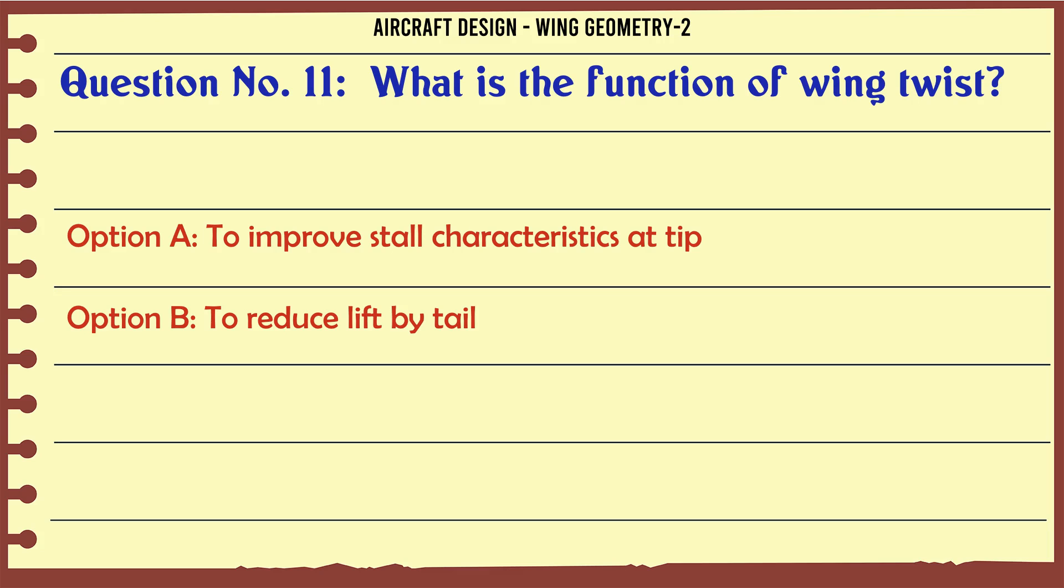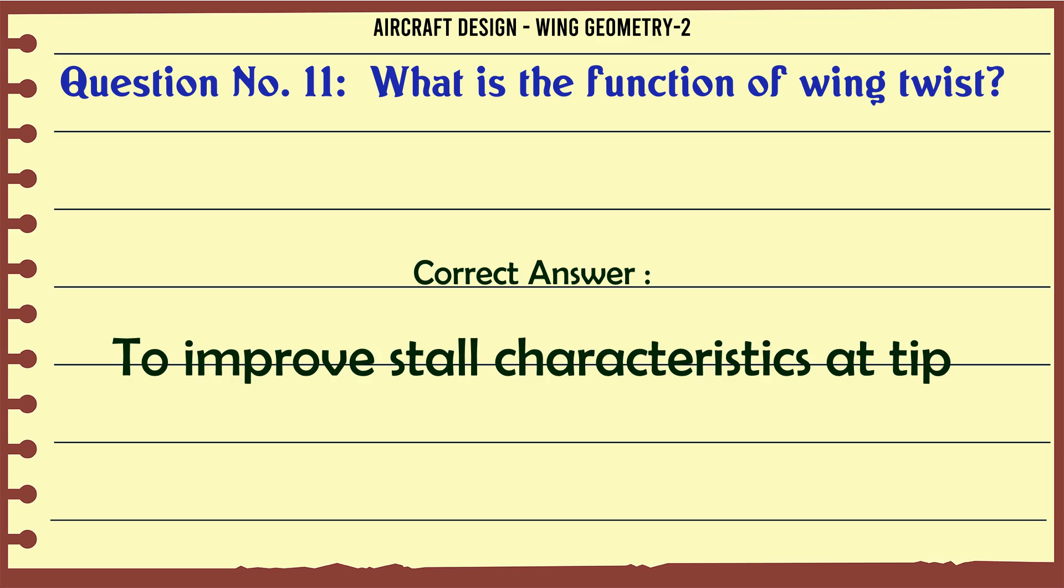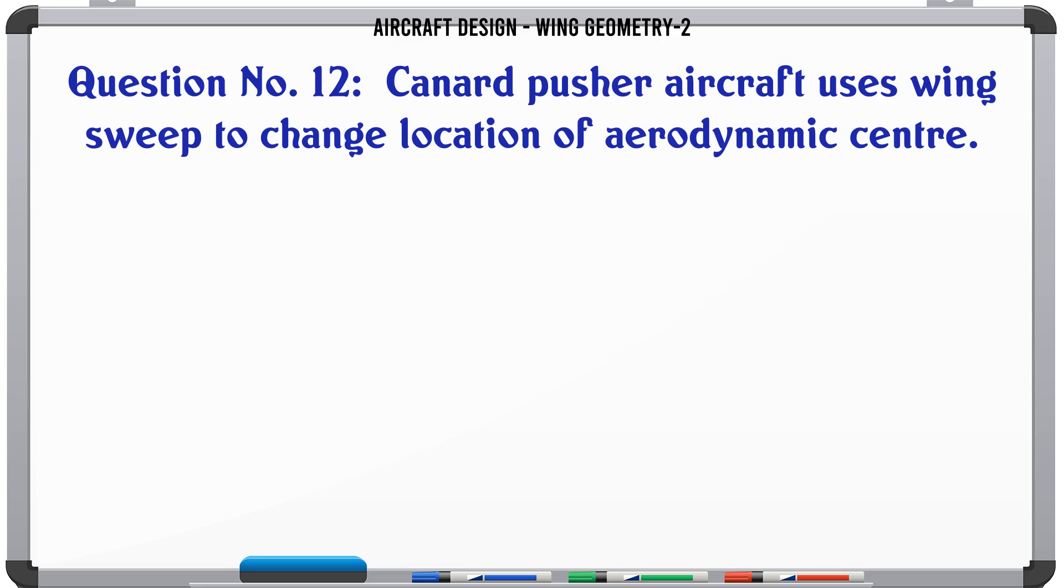What is the function of wing twist? A: To improve stall characteristics at tip, B: To reduce lift by tail, C: To provide lofting, D: To increase engine thrust. The correct answer is to improve stall characteristics at tip.